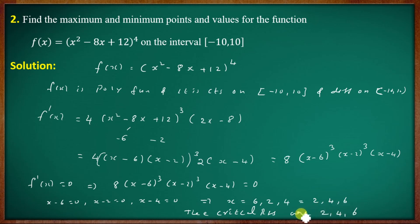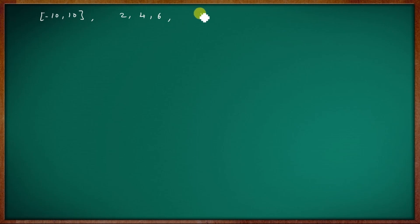List the critical points: x₁ = 2, x₂ = 4, x₃ = 6. Also include the endpoints of the interval [-10, 10]. List f(x₁), f(x₂), f(x₃) and the endpoint values. The function is f(x) = (x² - 8x + 12)⁴.